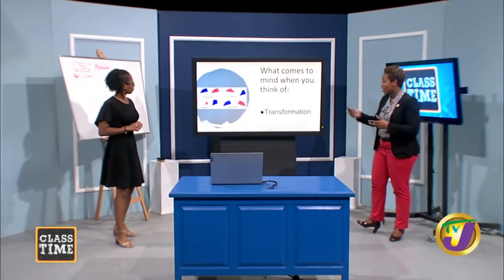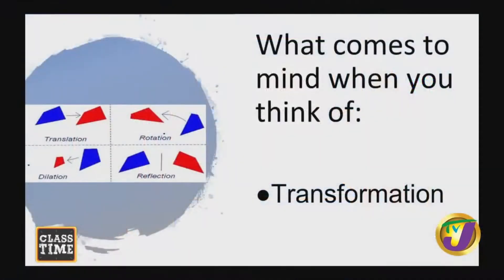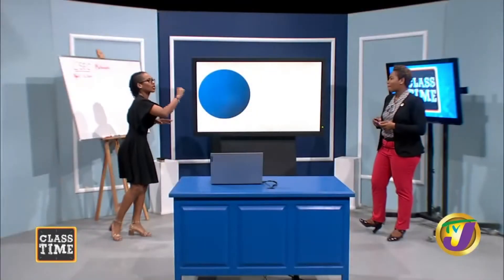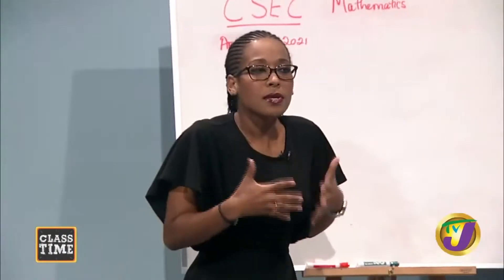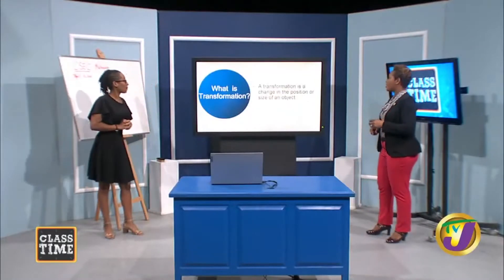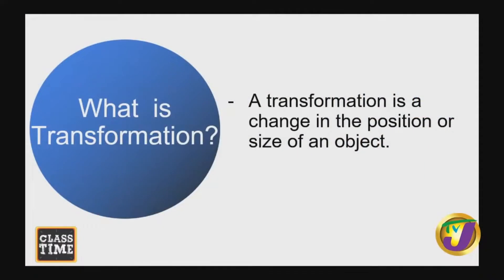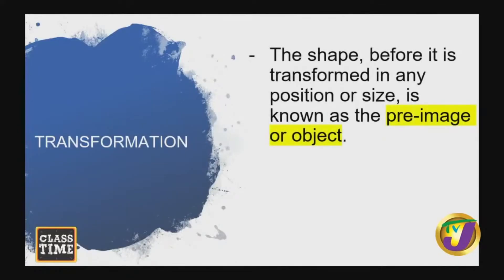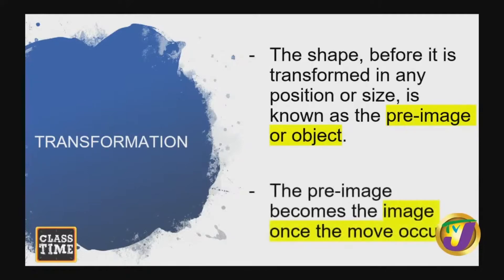We need to formally define what transformation is. Transformation is a change in the position or size of an object. The shape before it is transformed in any position or size is known as the pre-image or object. And the pre-image becomes the image once the move takes place — and this move is the transformation. So: pre-image or object first, then image after the transformation has taken place.